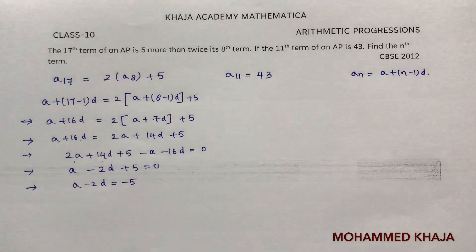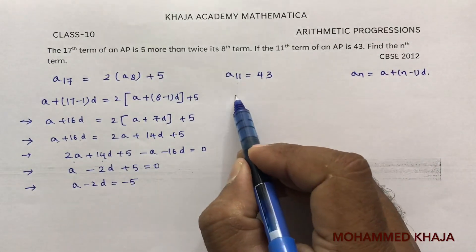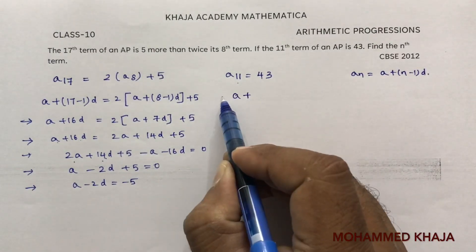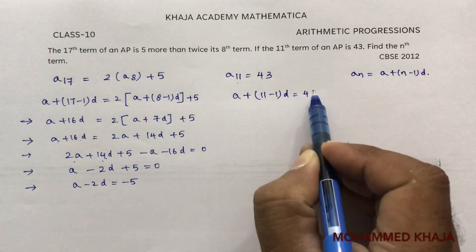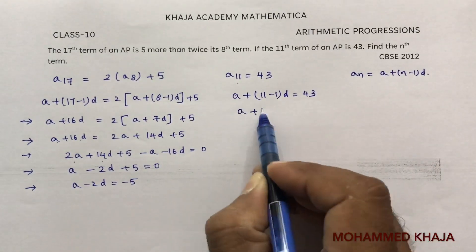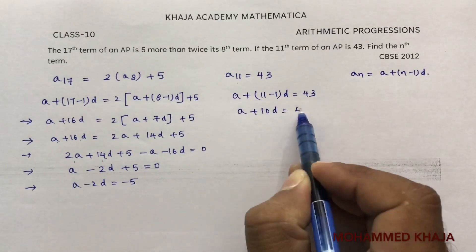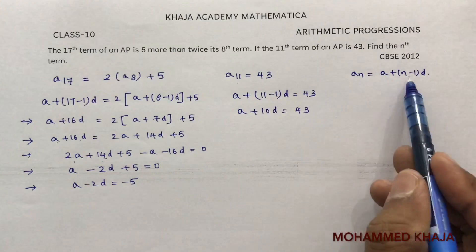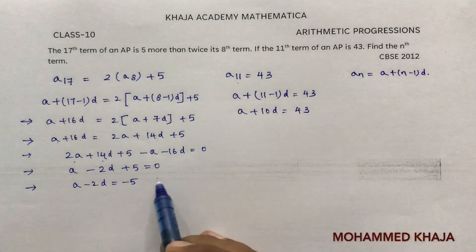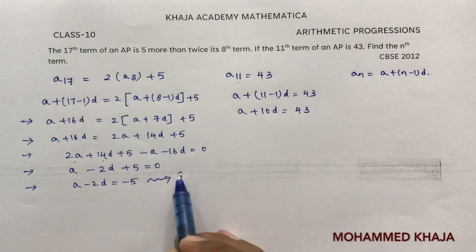Now a11 will be a plus 11 minus 1 into d equals 43. So a plus 10d equals 43. The 11th term is 43, so a plus 10d is 43. This is equation 1.